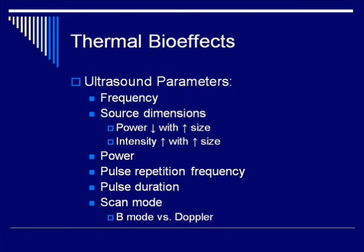The higher your frequency is, the more tissue attenuation you'll get, and therefore the more heating you'll see. Source dimensions are trickier. For a given power, increasing the size will spread out the power over the transducer surface, so you'll get less heating and less exposure. However, for a given intensity — which keeps the area in the denominator — a larger size probe will lead to more exposure. It's not easy to tell whether power or intensity are scaling with the size of the probe we use, which is just another reason why we use the thermal index rather than the intensity to discuss bio-effects.